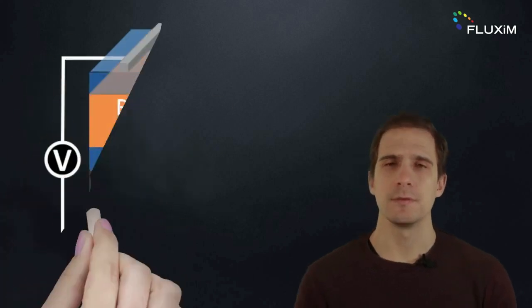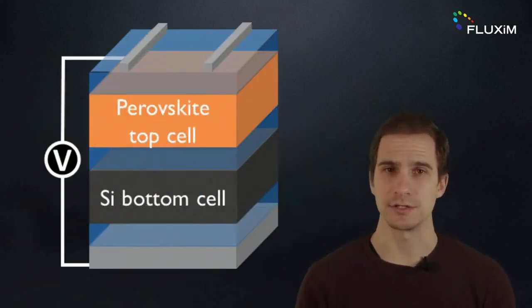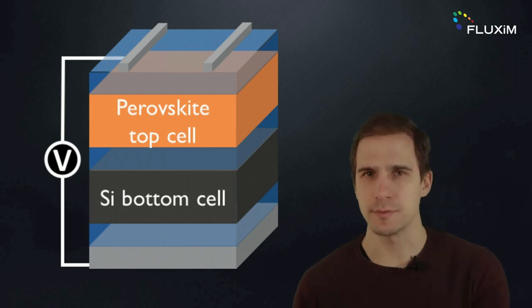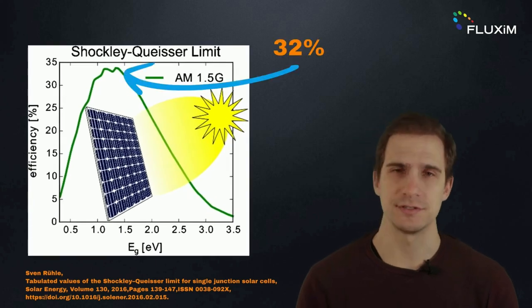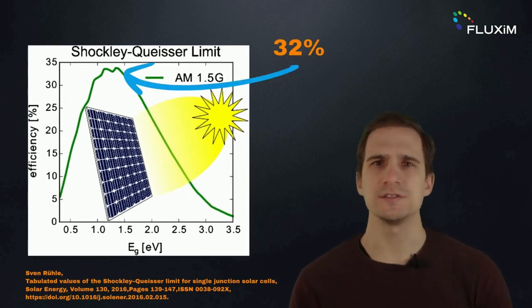How do we do this? Multi-junction solar cells are one answer. Multi-junction solar cells combine multiple light-absorbing materials into a single device, exceeding the theoretical Shockley-Queisser efficiency limit. This means more efficient and cost-effective solar energy.